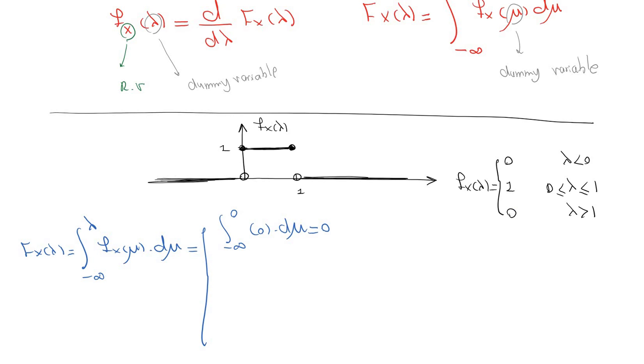For the second part, it's minus infinity to zero plus zero to one of one d mu.